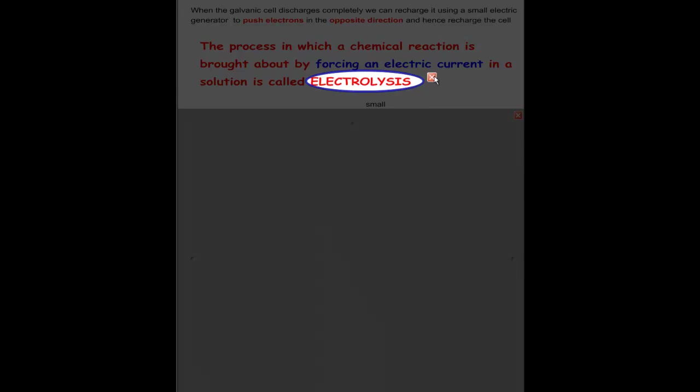In the previous video we talked about galvanic cells — car batteries and dry cells. Eventually these become discharged, and the only way to charge them up is to use a small electric generator to push electrons in the opposite direction to recharge the cell. The process that does that is called electrolysis.